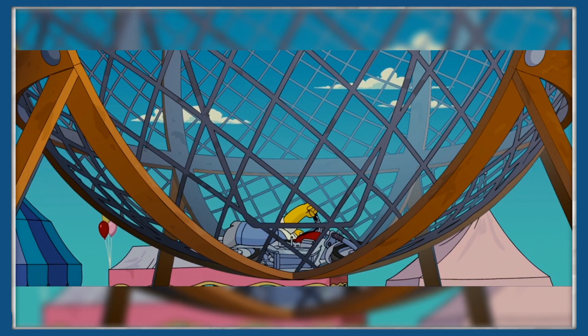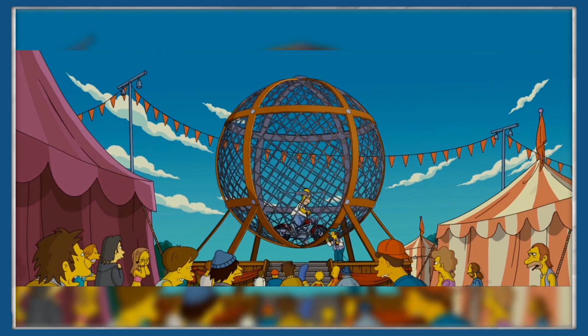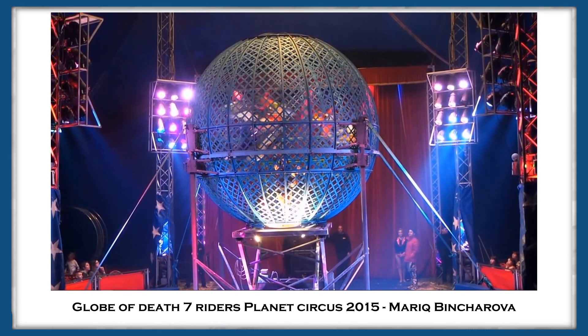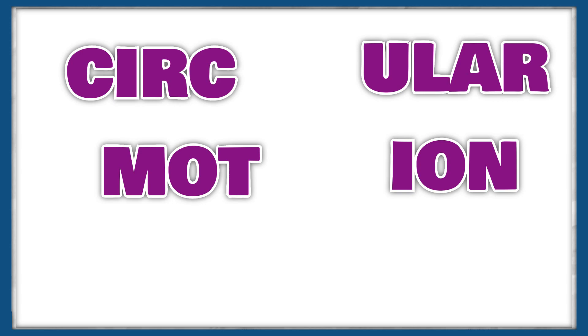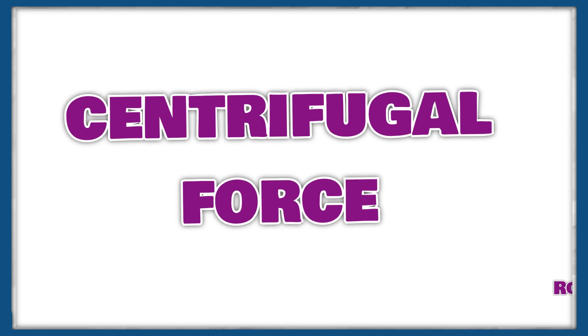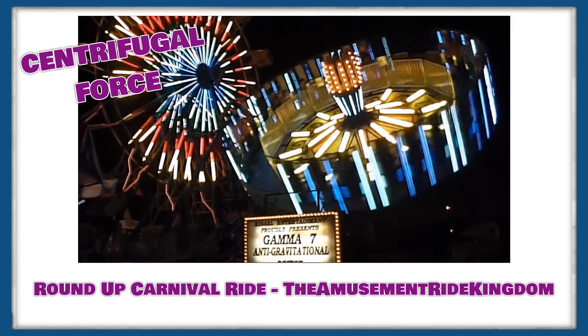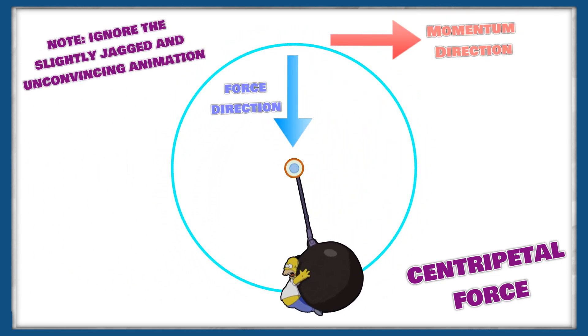The Simpsons travelled to a carnival where Homer won a truck by riding a motorbike around a ball of death. This is a common carnival stunt which originated in 1901 as the Cycle Whirl, where cyclists performed in a half dome rather than a full dome. This means we're looking at circular motion, and there are two kinds of forces which act in a circle: centrifugal force, which is the outward force on a mass when rotated, and centripetal force, which is the force necessary to keep an object moving in a circular path, directed inwards towards the central point of rotation.